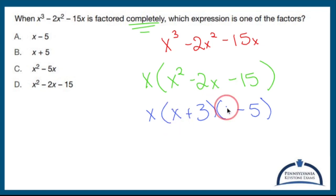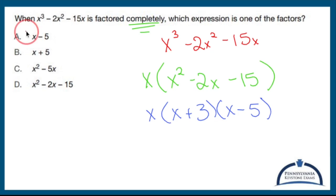So now everything is factored completely. I have three factors: x, x plus three, and x minus five. Which one of these is a factor? x minus five. There you have it — that's my answer.